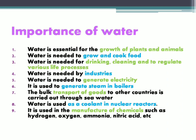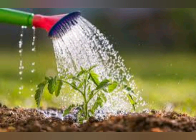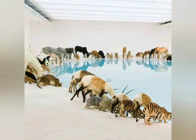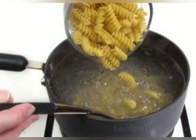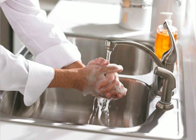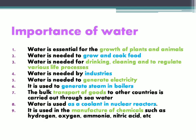Number one: water is essential for the growth of living beings, that is plants and animals. All living beings need water for almost every function carried out by every cell of their body. Water is also used to grow and cook food, and it is also used for drinking, cleaning, etc.